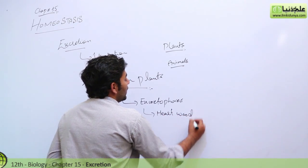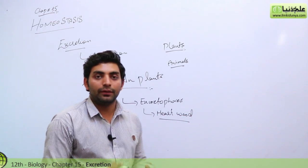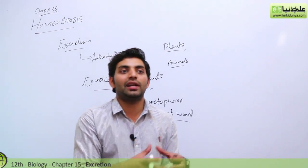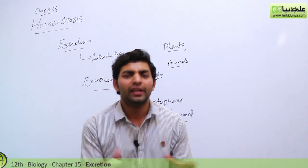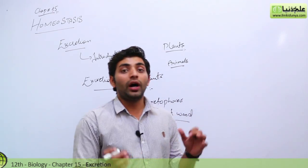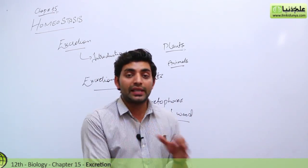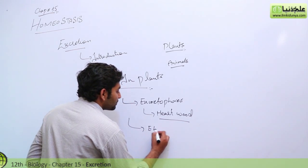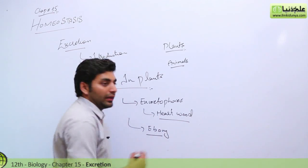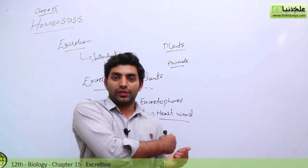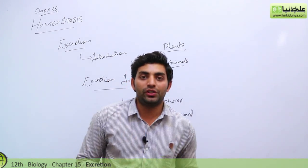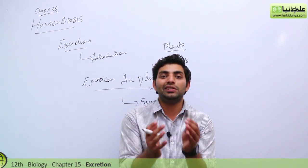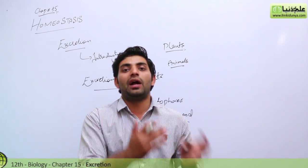This central portion is called hardwood, and it serves as an excretory product storage. One well-known example is ebony. This is an important point that may appear in multiple choice questions, so remember it. Overall, during various reactions in the plant, different excretory products are produced and stored or released from the body.